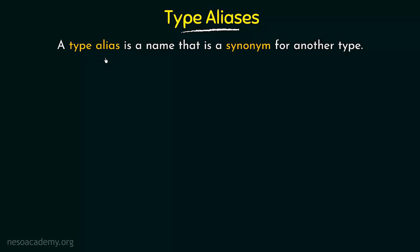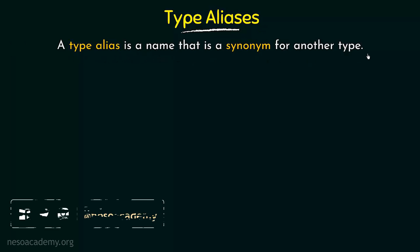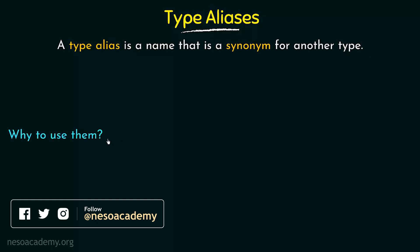In C++, a type alias is a name that is a synonym for another type. We have discussed different types in C++ and a type alias is a synonym or a different name that can be given to a type that already exists. Now, why do we actually need type aliases?